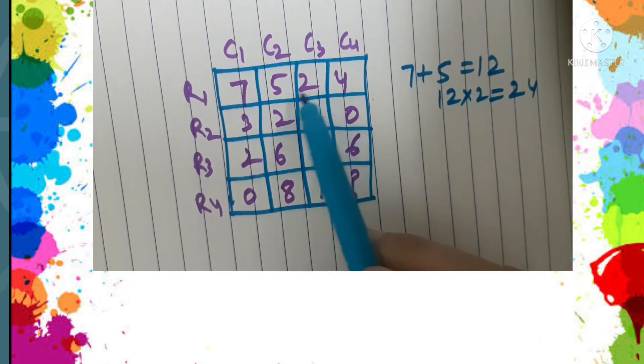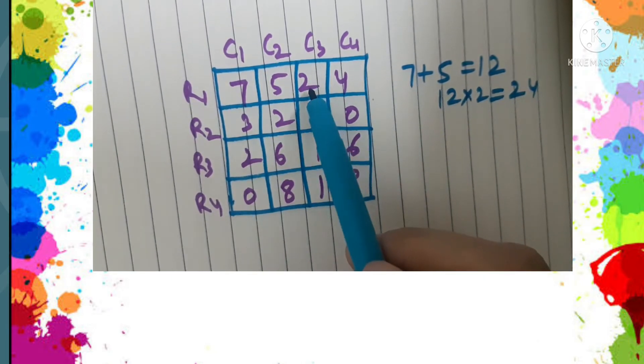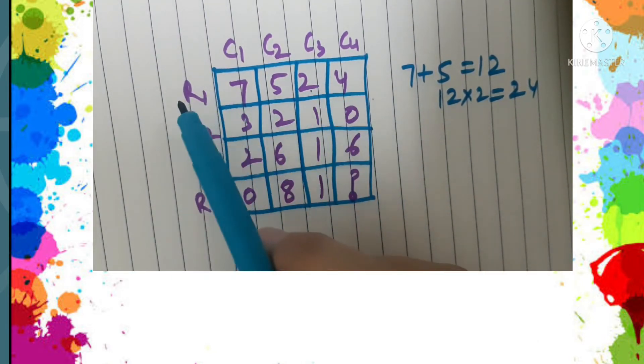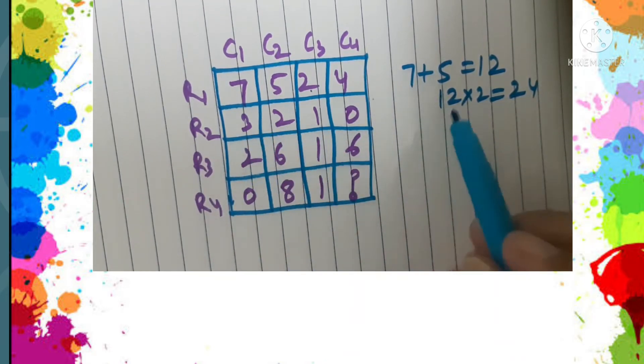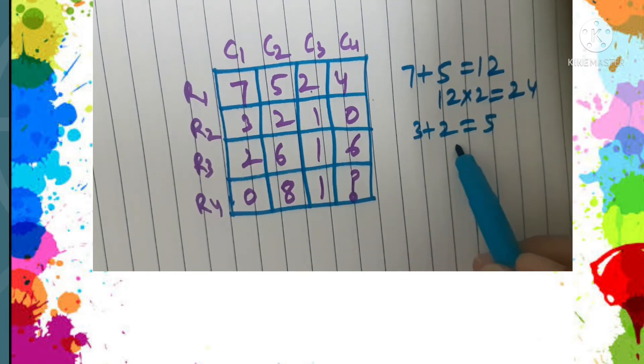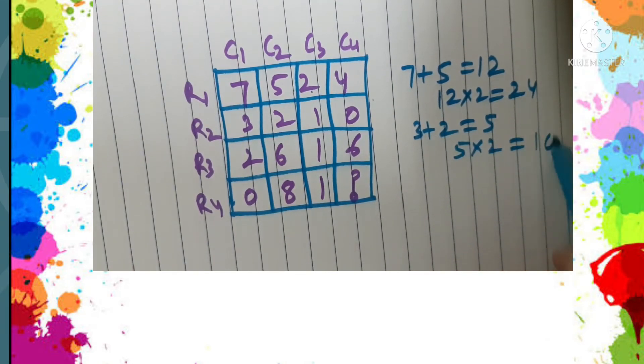You see that these are the digits in column three and column four in the first row. Now see the second row: three, two. So three plus two is five, and five into two is ten.